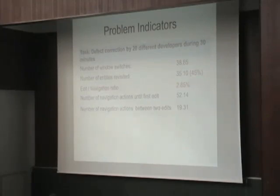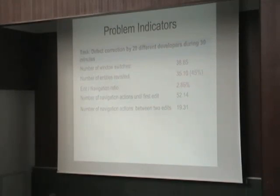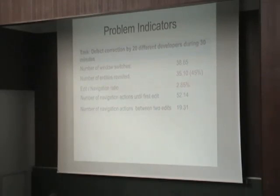They also had many revisits of methods and classes that were visited several times — seven methods or more than once. We recorded 35 revisits on average for all those developers. This means, on average, they visited 45 entities — classes and methods — that they opened more than once. This is 45% of all entities opened.